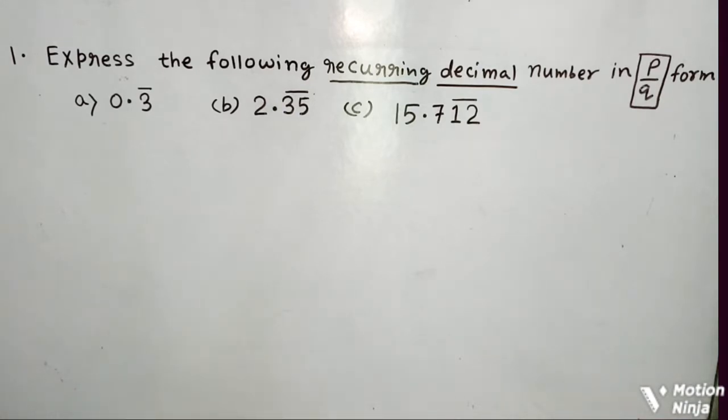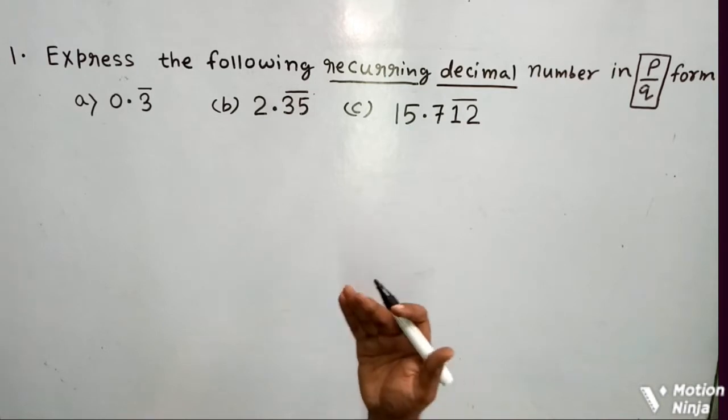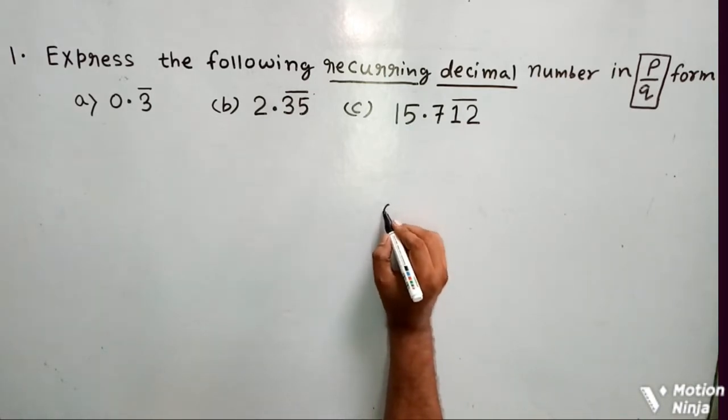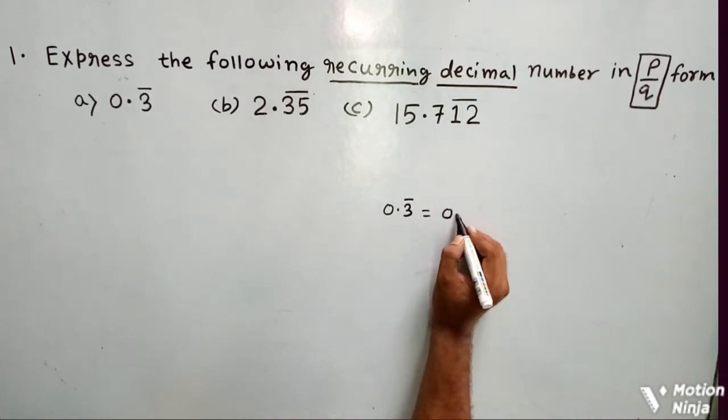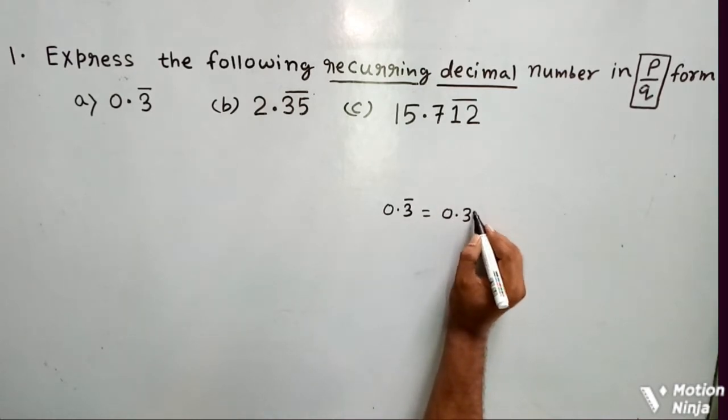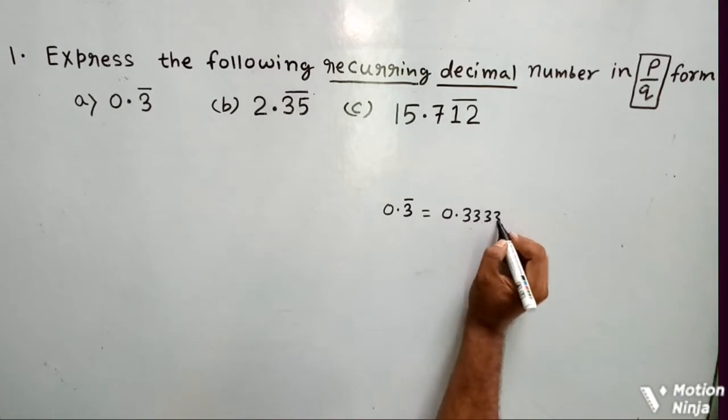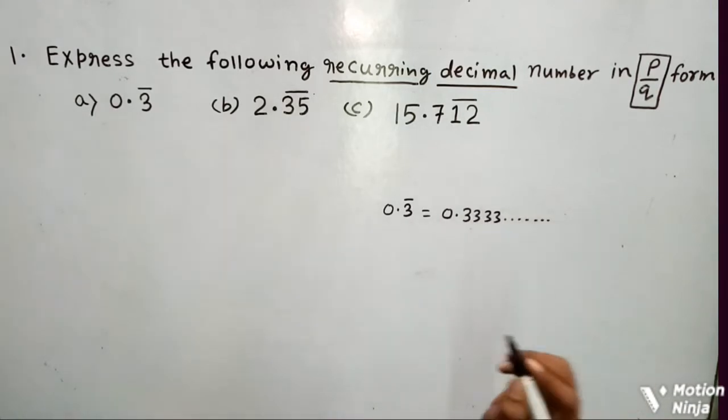Before I start, let me explain what is the meaning of recurring decimal. Well, recurring decimal means the decimal numbers which are reoccurring. For example, if it is written 0.3 with a bar, it means after the decimal point, 3 will go on repeating till infinity.